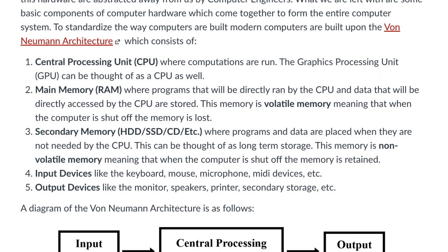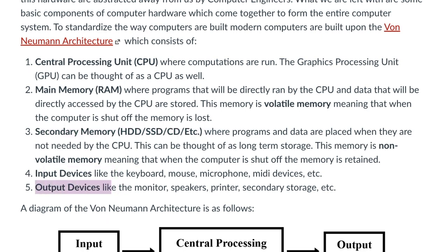Those five devices are the central processing unit, main memory, secondary memory, input devices, and output devices. The central processing unit, more commonly referred to as the CPU or simply the processor of the computer, is where computations are run. This means this is where instructions are run on the computer.